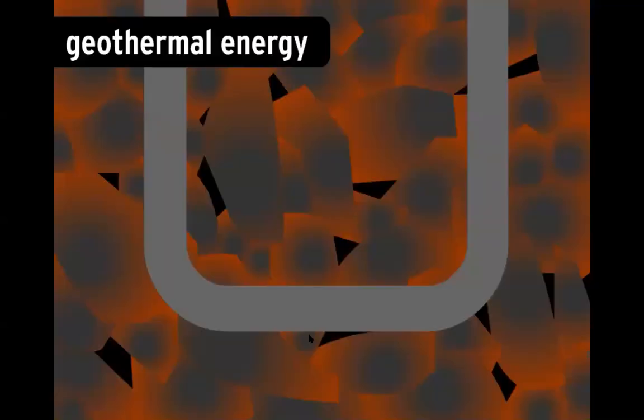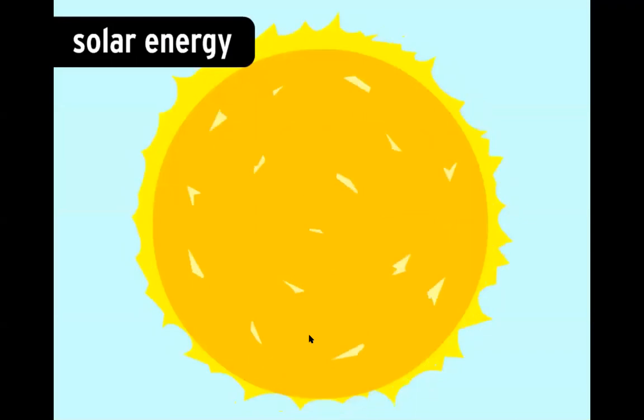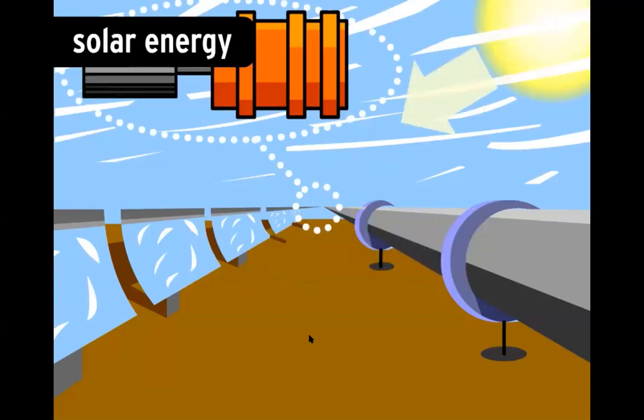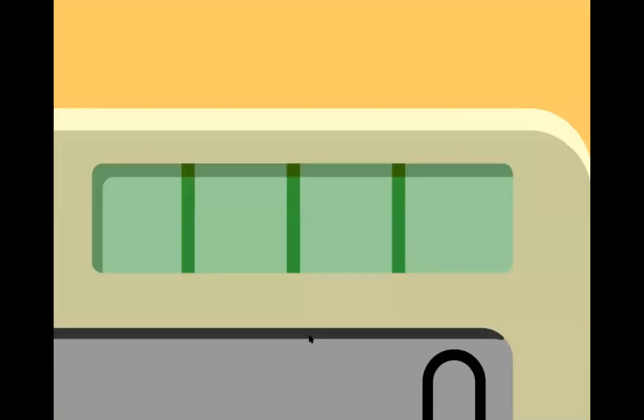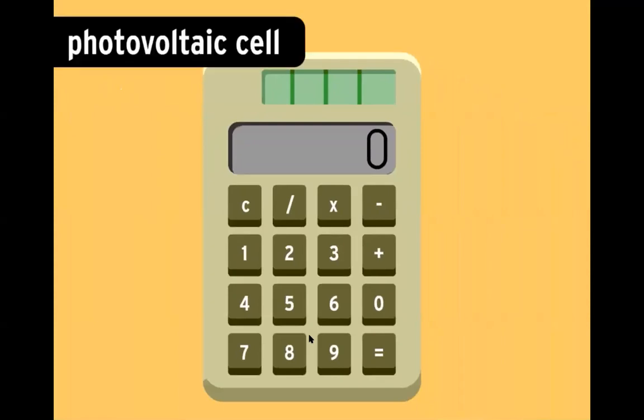Geothermal energy comes from hot rocks in the Earth's crust that pull temperatures up to 1,000 degrees Celsius. Water heated by these rocks turns to steam, which turns the turbines of generators. Solar energy comes from the sun. Heat from the sun can be focused onto water, creating steam, which turns the turbine of a generator. Solar energy can also be converted directly into electricity with the use of a photovoltaic cell.